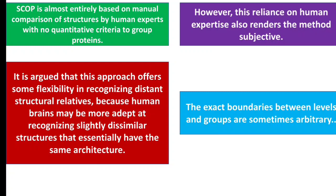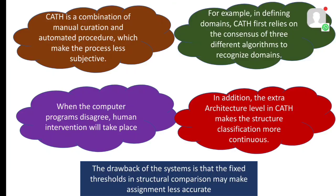The problem with SCOP is that when the exact boundaries of levels and groups are unclear, we don't know exactly how to classify them. In CATH, the second step involves Class, Architecture, Topology, and Homology. We work with both computers and human expertise — we use computer algorithms to help compare protein structures.